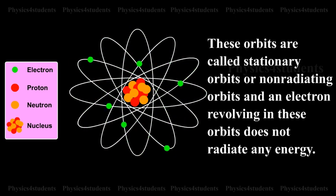These orbits are called stationary orbits or non-radiating orbits and an electron revolving in these orbits does not radiate any energy.